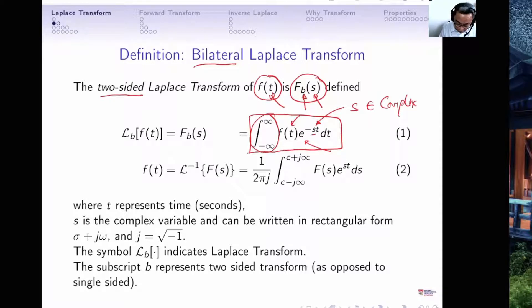The notation commonly used is this, F_b(s) to remind us that b is bilateral, or sometimes we use this notation, the nice font ℒ_b to denote Laplace transform bilateral with the input f(t).